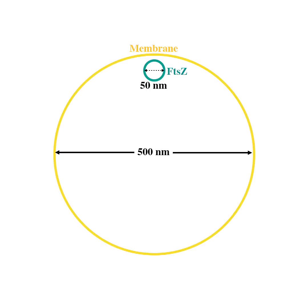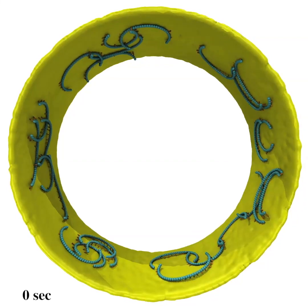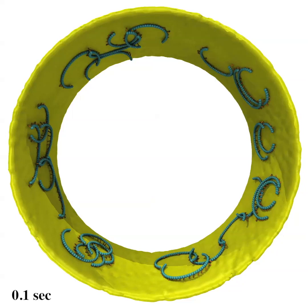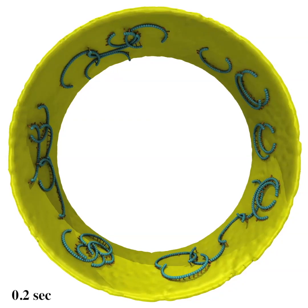We first tested the case in which the filament's preferred curvature is 10 times larger than that of the initial membrane. We found that the filaments fail to constrict the membrane. Instead, they roll over to bend in the plane of the membrane since this is more energetically favorable.